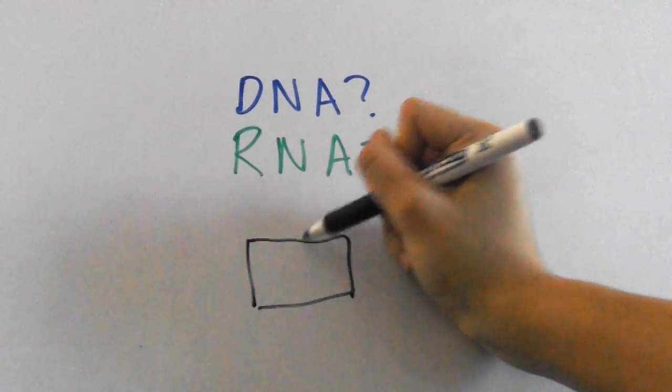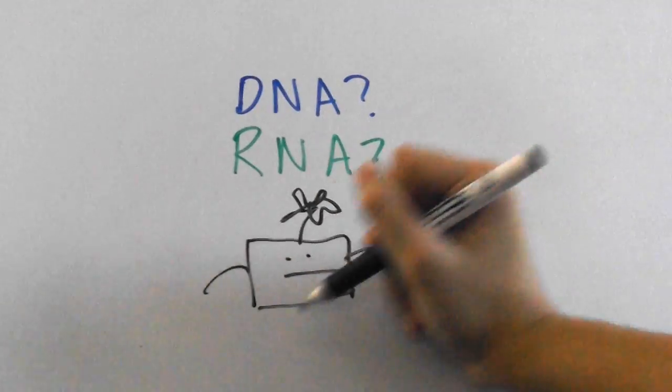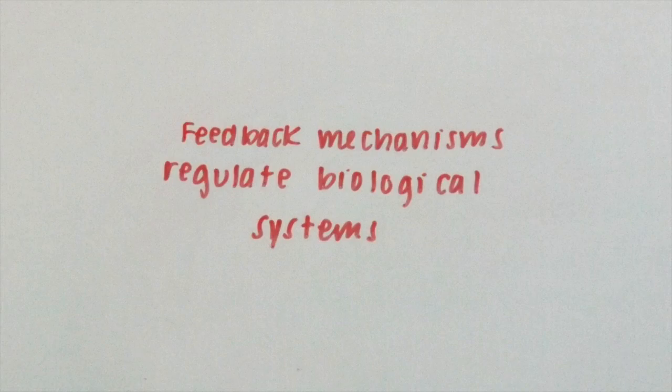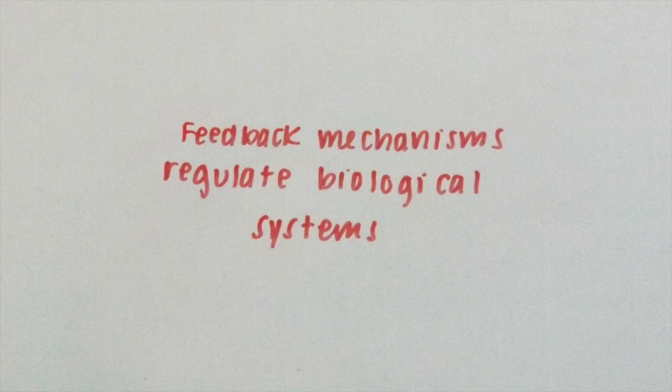The last theme is that feedback mechanisms regulate biological systems. You may have seen me explain this in my other video, The 4 Big Ideas of AP Biology, but in case you haven't, I'll tell you right now that there are two types of feedback, positive and negative.